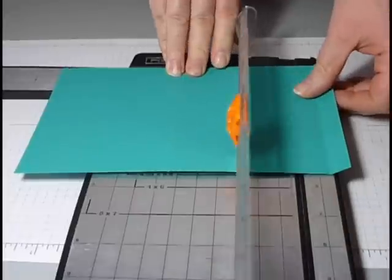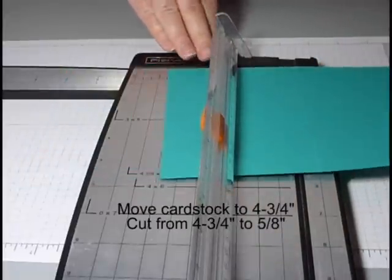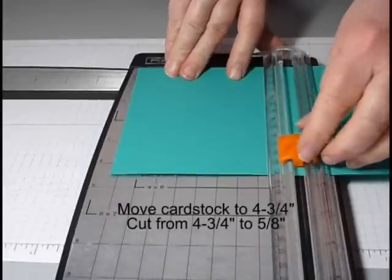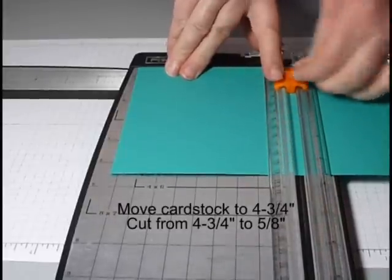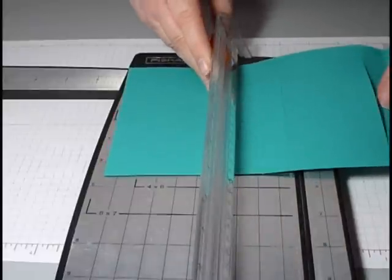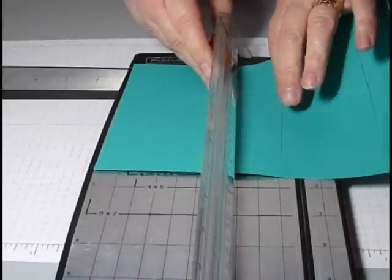Then we're going to move our paper over to 4 3⁄4 and make a second cut that's exactly the same, from 4 3⁄4 inch down to 5 1⁄8 inch at the bottom. Now we've created our lines that the slider card is going to follow.